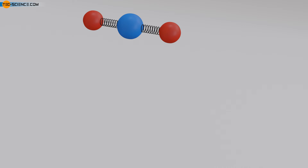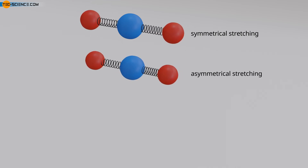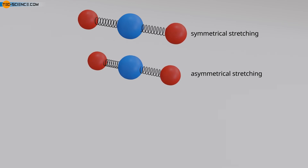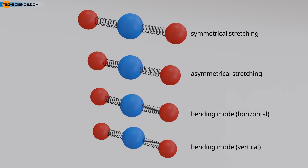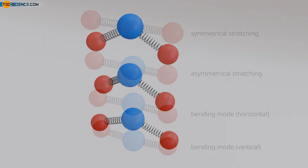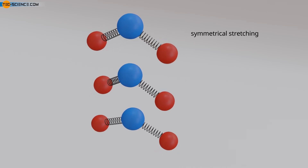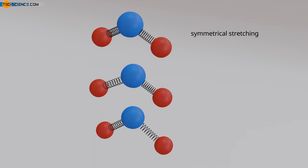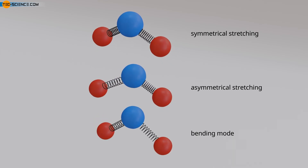One vibrational mode of a triatomic linear molecule results from the symmetrical stretching of the two outer atoms along the molecular axis around the centrally located atom. Another mode is asymmetric stretching, where all three atoms vibrate along the molecular axis. The third and fourth vibrational modes result from a bending mode, also called scissoring, distinguished by whether the bending motion takes place in a vertical or horizontal plane. For triatomic non-linear molecules, there are generally three modes of vibration: symmetrical stretching, asymmetrical stretching where atoms vibrate phase-shifted, and a bending mode where the outer atoms vibrate in a scissoring motion within the molecular plane, causing the bond angle to oscillate around a resting position.